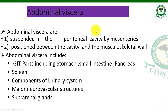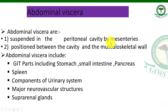Next is abdominal viscera. Viscera refers to the internal organs. The abdominal viscera are suspended in the peritoneal cavity by means of mesenteries. All the internal organs in the body are suspended in the peritoneal cavity by mesenteries — think of mesenteries like ropes from which things are hung. Their position is between the cavity and the musculoskeletal wall.